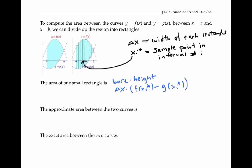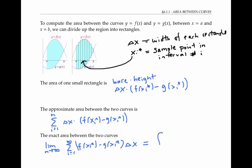Now that we have an expression for the area of one of these rectangles, we can add up all those areas as before to get an expression for the approximate area between the curves. And as before, we can get the exact area by making these rectangles skinnier and skinnier — we take the limit as the number of rectangles goes to infinity of this Riemann sum. The limit of a Riemann sum is given by the integral, where the x sub i stars become our variable x and delta x becomes dx. Our bounds of integration are from a to b, giving us an expression for the area between our two curves.